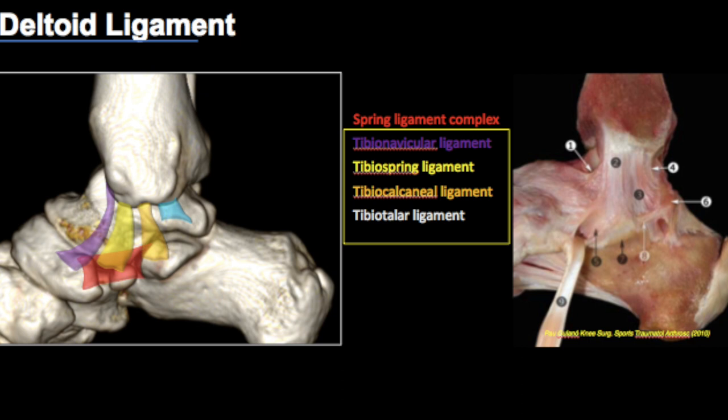As a sonologist, if you have to include this in your report, you can report it as a full thickness tear or a partial tear — and your job is done. There are quite a few variations and you may or may not be able to identify all the components of the deltoid ligament complex.